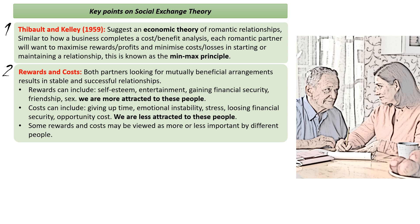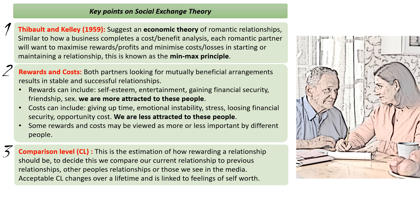Social exchange theory doesn't suggest it's only down to rewards and costs — it also accepts that we consider our relationships in comparison. First, we compare our relationship to our own internal working model of how we feel a relationship should be. This might be based on relationships we've seen with our parents, our friends' relationships, or romantic relationships we've seen on TV. These all come together to form what we feel a good relationship is. This comparison level changes over the course of our lifetime as we go through different relationships — a particularly good relationship might raise it, while a bad one might lower it.